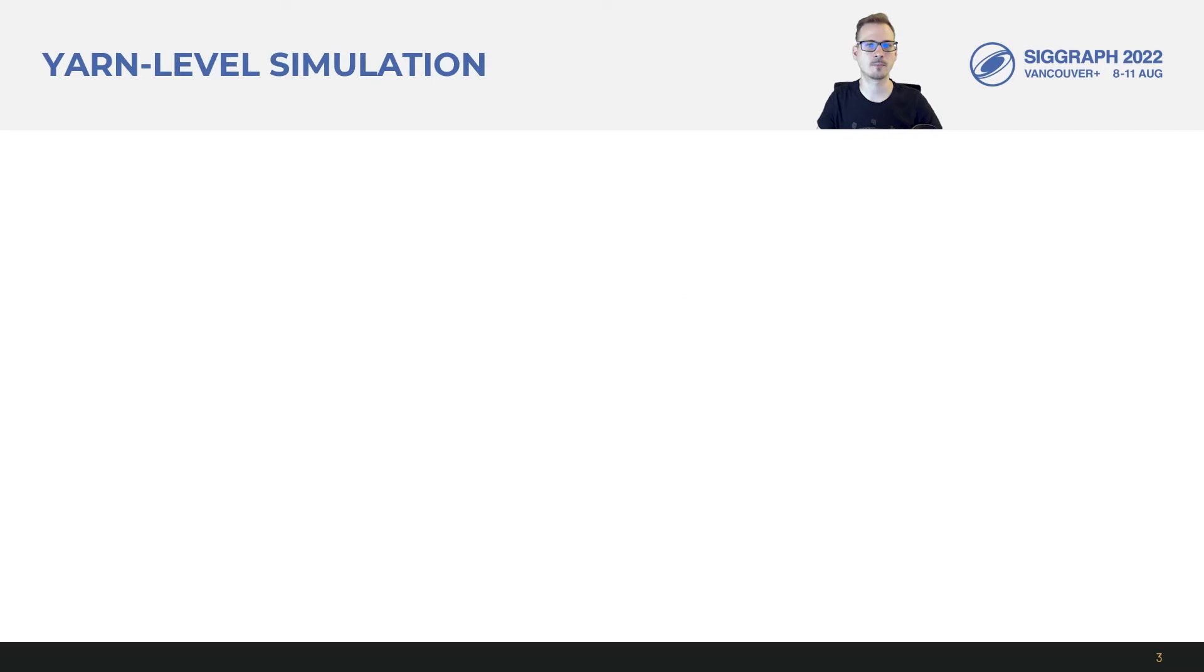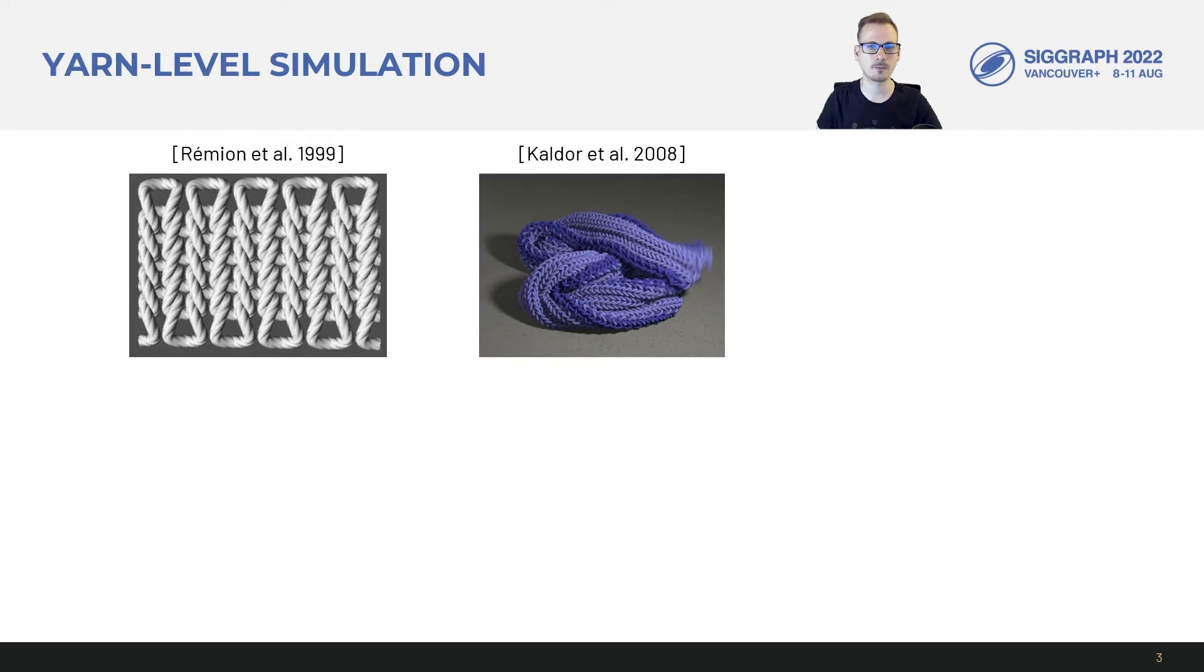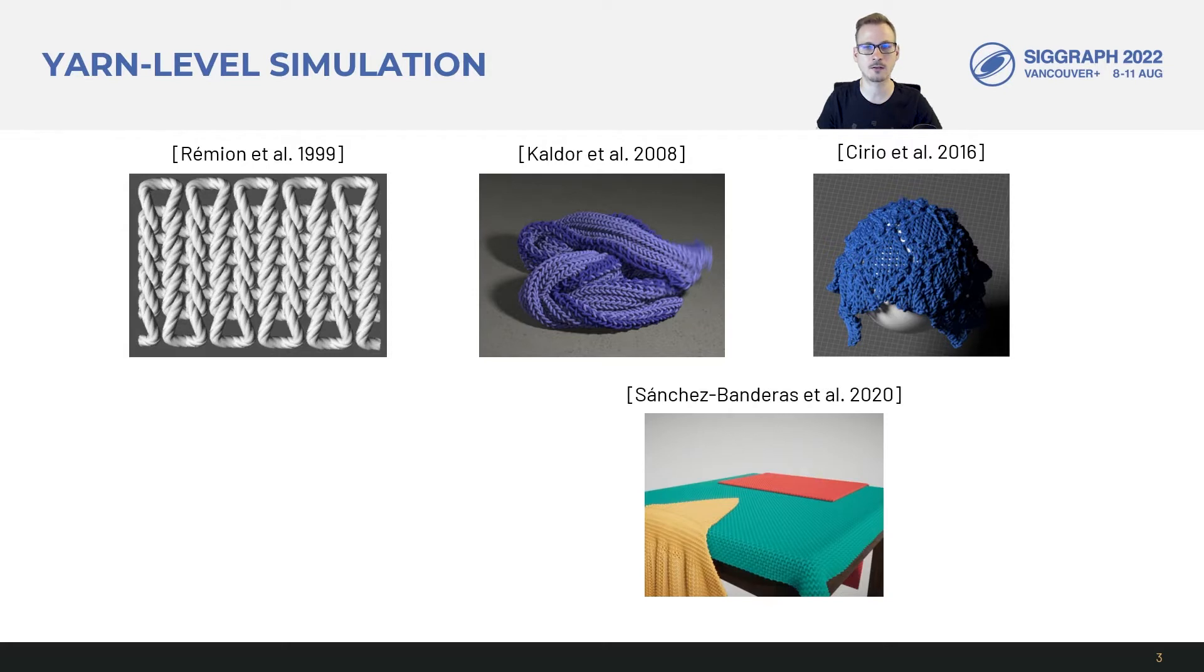Because of this complexity, we've seen a lot of research in computer graphics toward simulating fabrics as individual yarns. Remyon et al. introduced simulation of knits using splines. Calder et al. improved on this with explicit contact handling at larger scales and later merged the model with discrete elastic rods. Serio et al. proposed an efficient persistent contact formulation based on Eulerian on Lagrangian degrees of freedom, which was later extended to handle multiple layers of fabric by Sanchez Banderas et al.